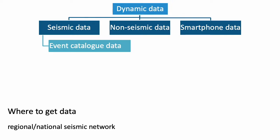For dynamic data, this is data you get when your platform is running and connected — whenever there is an event, the dynamic data starts coming in. The dynamic data is mostly related to seismic data from a given event: event catalogue data plus ground shaking data that will come later. This is the only mandatory dynamic data type. There are also non-seismic data and smartphone data, but they are not mandatory.